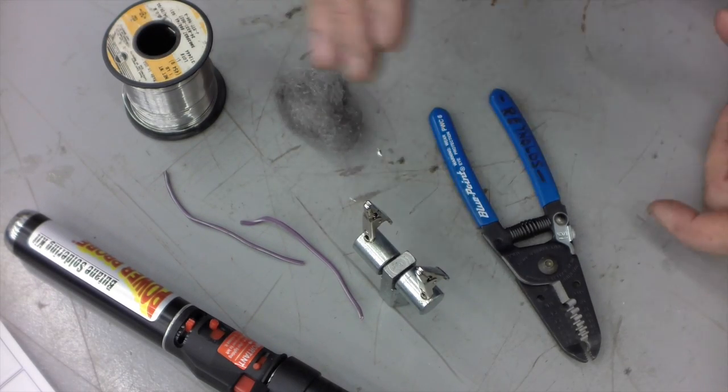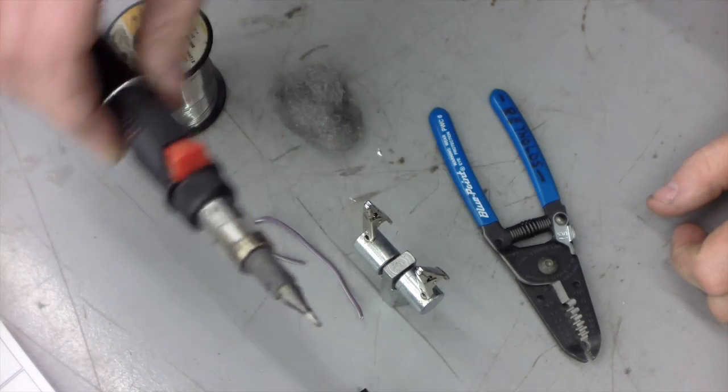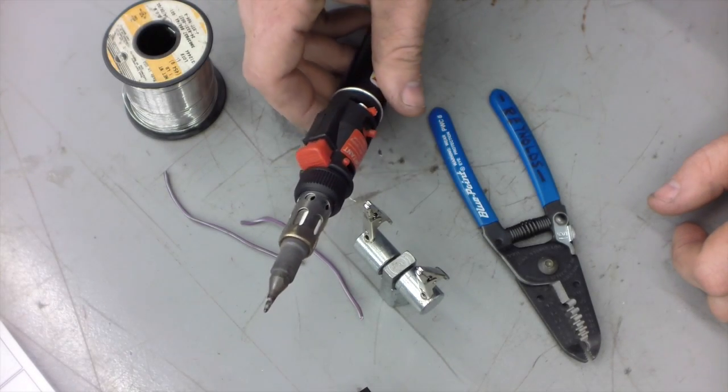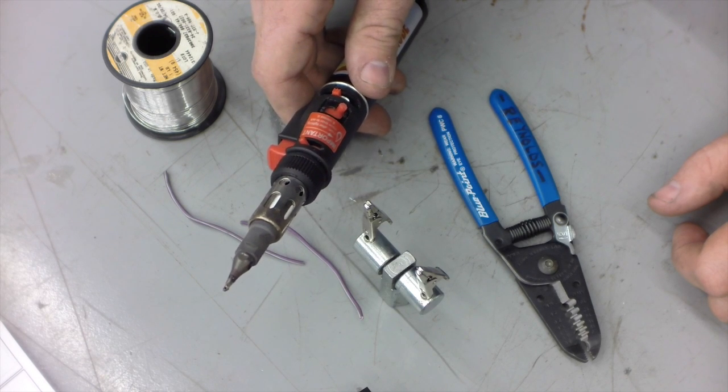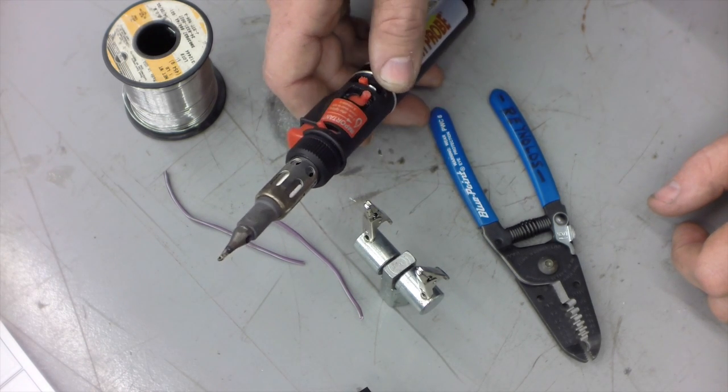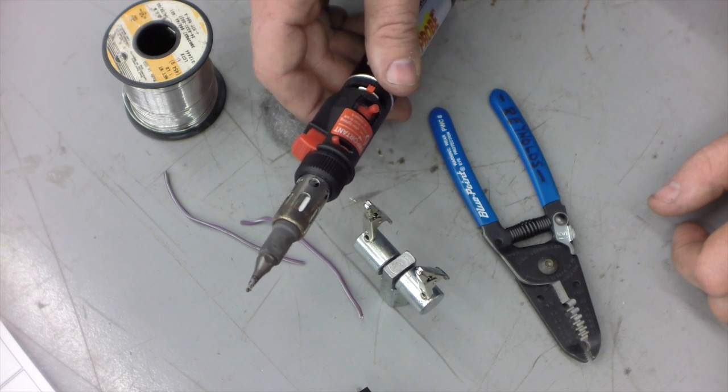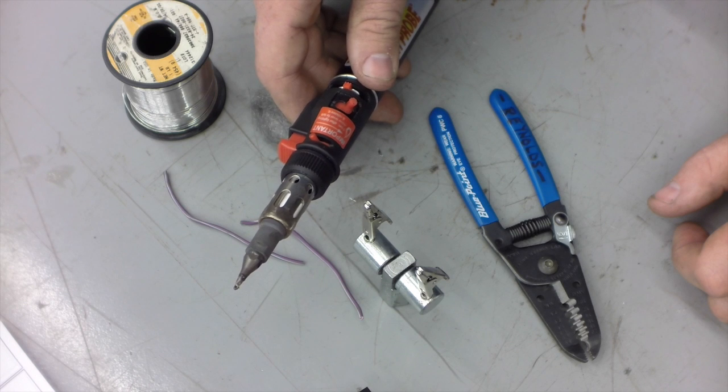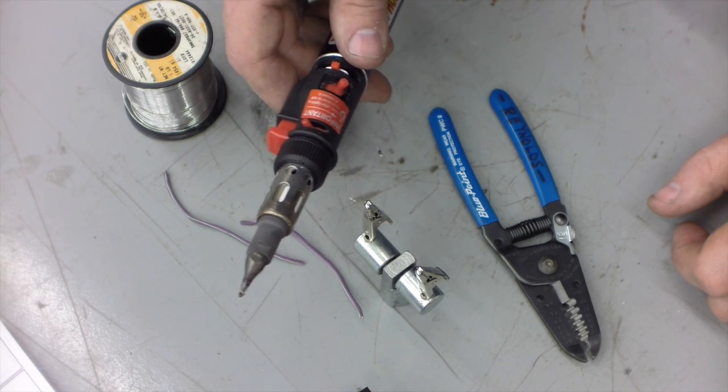This is the soldering iron I'm going to use—again, this is a butane-based soldering iron. If you're working on a lot of electronics, you're typically not using one of these; you're going to use an electric plug-in style soldering iron. But it's a great soldering iron nonetheless, and again, since I work in the automotive industry, this is very convenient for me for working in tight locations. I can just throw it in my toolbox or my tool bag, and wherever I go I've got access to a soldering iron—I don't need power.